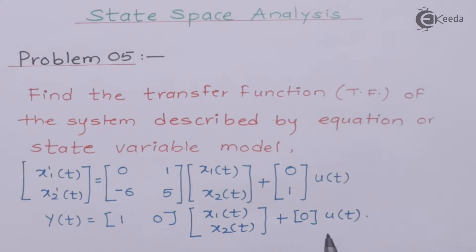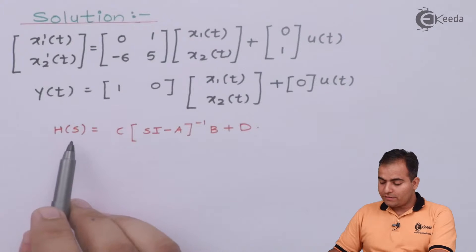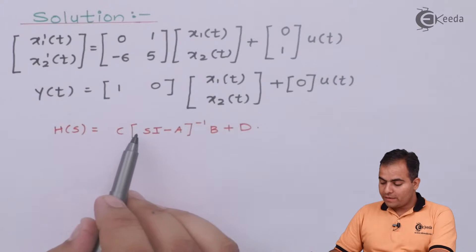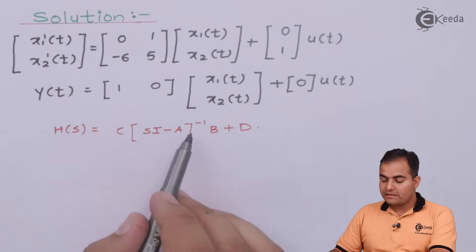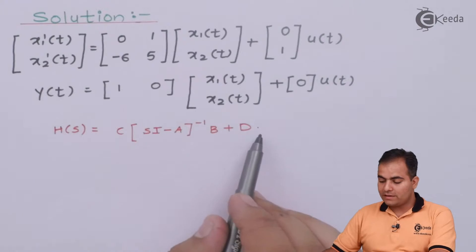Normally in exams they will give D equal to 0, or you will get an equation like y(t) = C·x only. We will now see how to obtain the transfer function. There is a formula from the theory part: H(s) = C · (sI - A)⁻¹ · B + D.